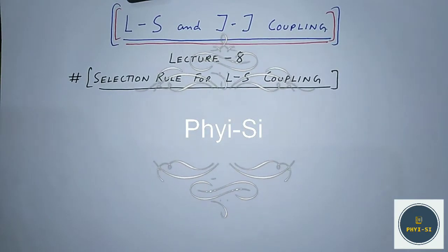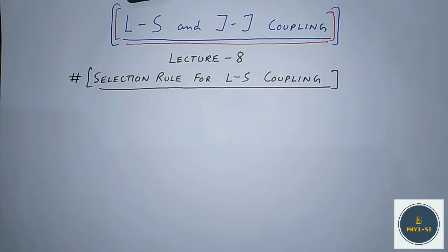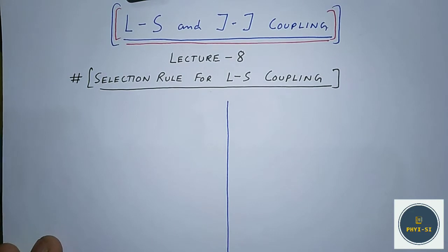Hello friends and welcome back to my channel Phi Psi, where we are studying LS and JJ coupling. This is lecture number 8, which is about the selection rules that must be followed during transitions by multi-electron atoms in LS coupling. The selection rules for electric dipole transitions in multi-electron atoms are very similar to the selection rules for one-electron atoms, as we have already seen in hydrogen-like atoms.